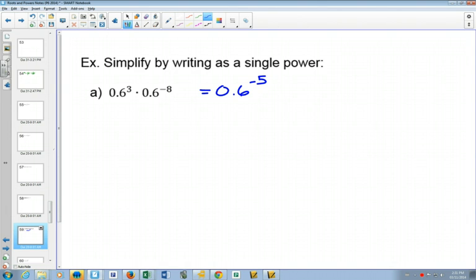However, sometimes you'll run across the same question on a multiple choice, and it might be that 0.6 to the negative 5 isn't one of the answers. What could be another way that I could write this that might have been on the multiple choice? 1 over 0.6 to the 5. Good. So you could use the negative exponent rule. Could you write 0.6 as a fraction? Yes. What is it? 6 tenths. And in lowest terms, that would be 3 fifths.